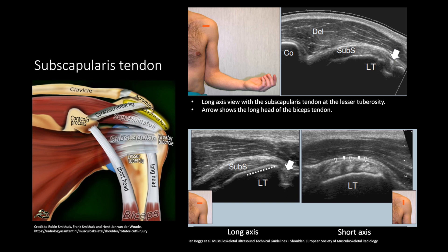The subscapularis muscle lies in front of the scapula with its tendinous insertion mainly at the lesser tuberosity. For positioning, you want to rotate the arm externally so you can see the subscapularis tendon better. The images show the echogenic tendinous attachment to the lesser tuberosity. The bottom right image shows a short axis view of a normal multi-pennate appearance.